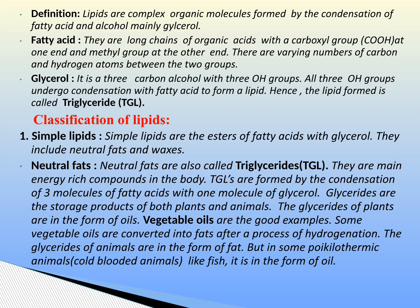Good sources of saturated fatty acids are coconut, palm oil, butter, groundnut oil, etc. Unsaturated fatty acids contain one or more double bonds and have a lower melting point than saturated fatty acids. Some important unsaturated fatty acids are oleic acid, linoleic acid, linolenic acid, etc. Good sources of unsaturated fatty acids are animal and plant fats, linseed oil, cottonseed oil, etc.